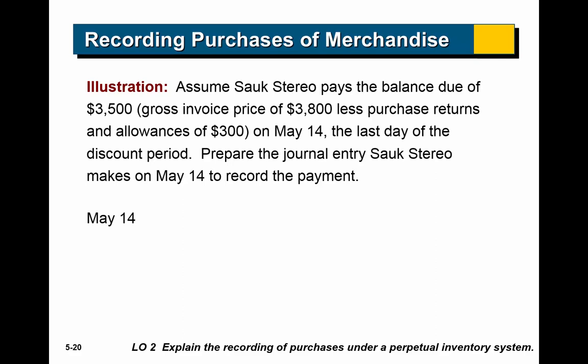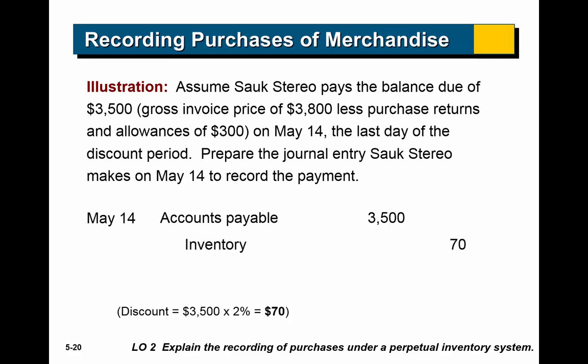Here's an example: Sock Stereo pays a balance due of $3,500 on May 14th, the last day of the discount period. Accounts payable is debited $3,500 — they're paying off the full payable. But they're not paying it all in cash. Inventory is credited to decrease it (since when they bought the goods they increased inventory by $3,500, but they're getting a discount). Cash is decreased by $3,430. When you get a discount it reduces the cost of inventory by that amount — the discount was 2% of $3,500, which is $70.